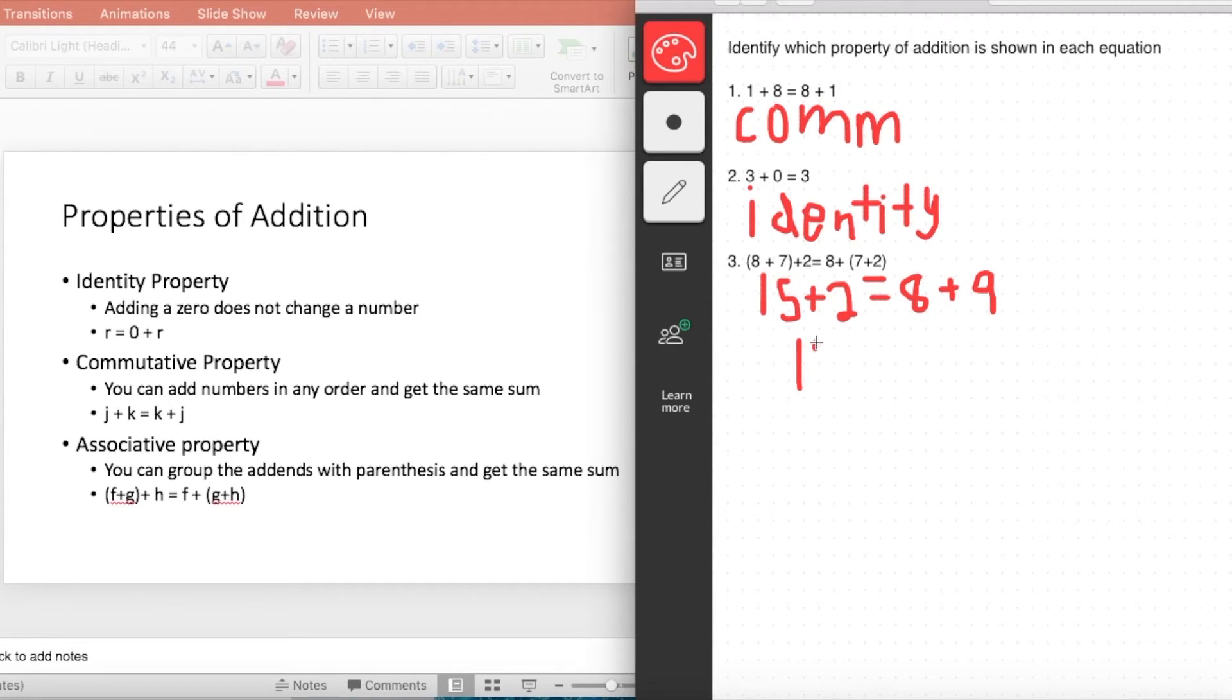You would get 17 = 17. Grouping the parentheses, the sums in different manners still gives you the same sum. So this is associative property.